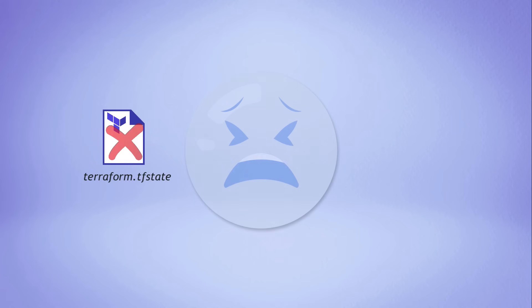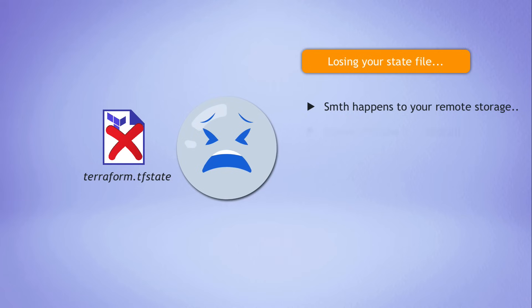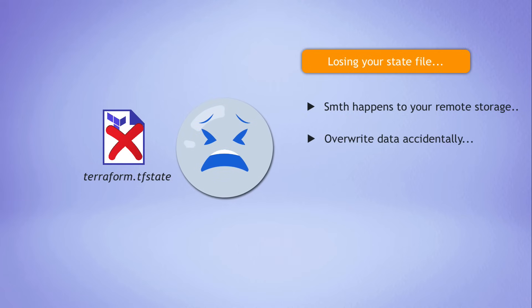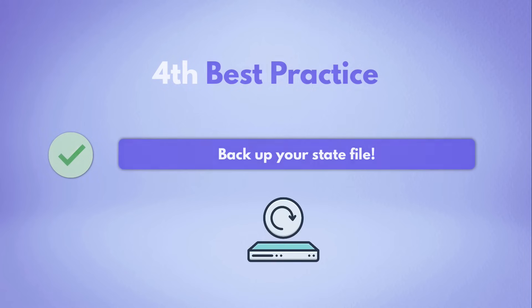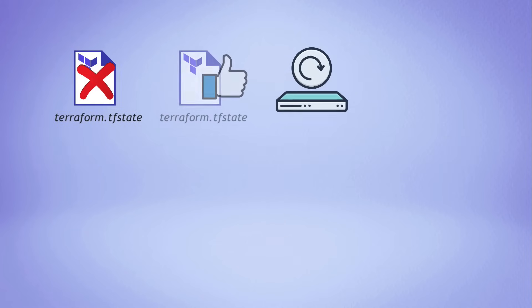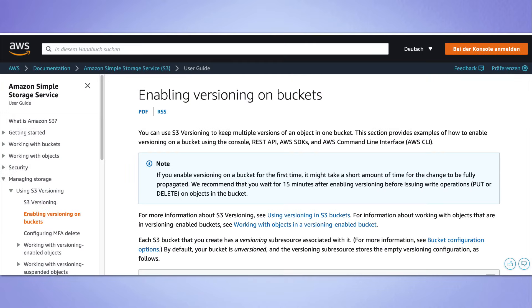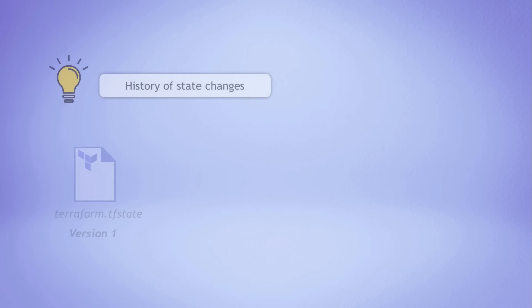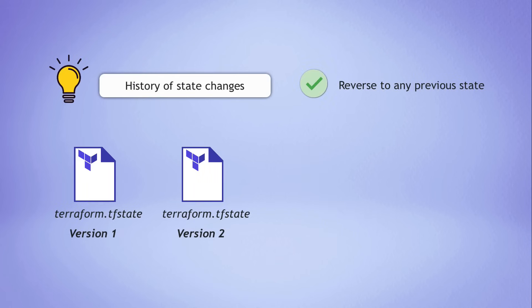What happens if you lose your state file? Something may happen to your remote storage location, someone may accidentally override the data, or it may get corrupted. To avoid this, the next best practice is to back up your state file. In practice, you can do this by enabling versioning, and many storage backends support this feature. In S3, for example, you can simply turn on the versioning feature. This also means you have a nice history of state changes and can revert to any previous Terraform state if you want to.